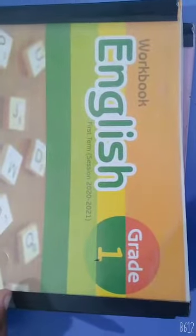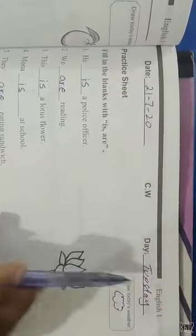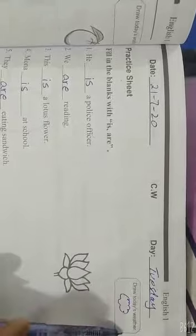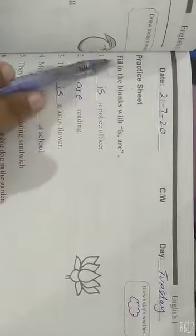Better open your English workbook and open page number 45. First of all, mention date and day. Also, draw today's weather practice sheet.